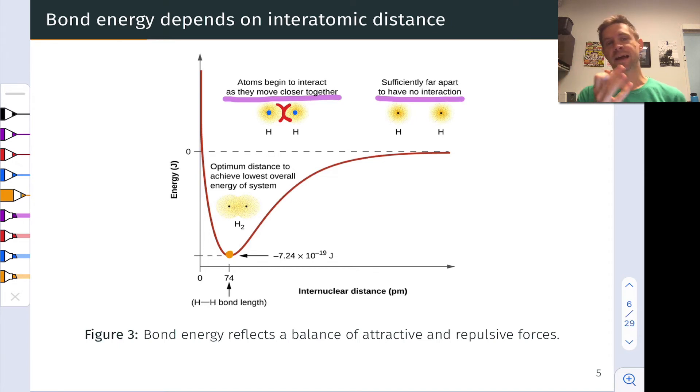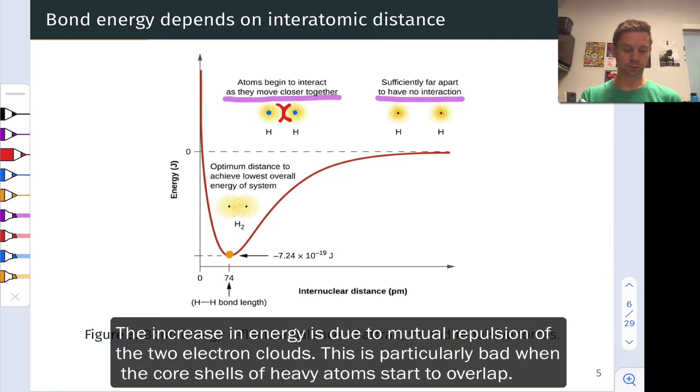And beyond that point, if we try to push the atoms closer together, we run into problems with electron-electron repulsion, because beyond this point, we've got these negatively charged electron clouds very strongly interpenetrating, and that's going to cause repulsive forces to build in and the energy of the system to go up.